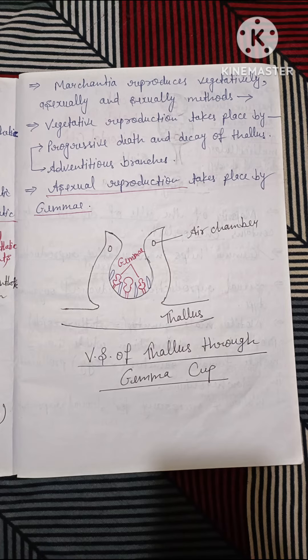The diagram shows the air chamber, thallus, and gemmae. In the gemma cup, the gemmae in the middle are older while those on the outer side are younger.